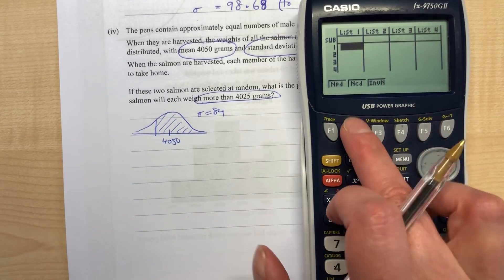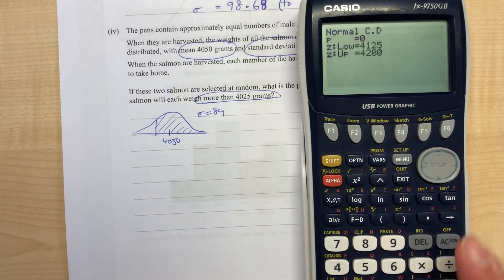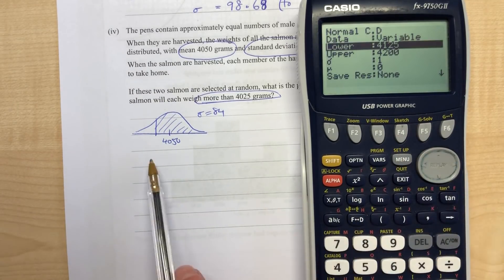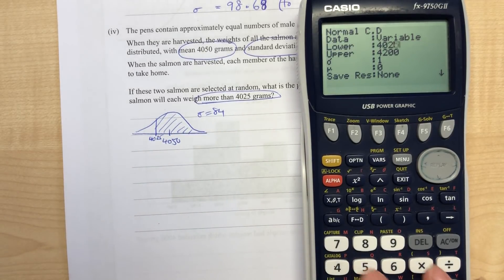Straightforward on our stats menu, distributions, normal, NCD. Make sure that says variable. We have our lower limit of 4025.